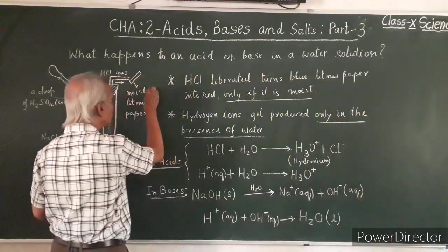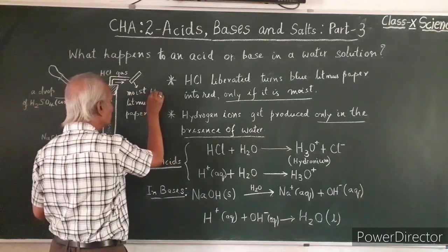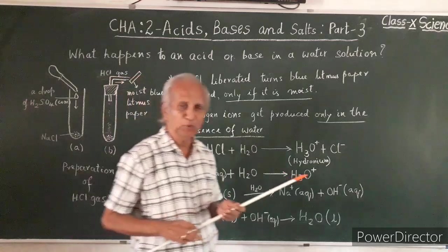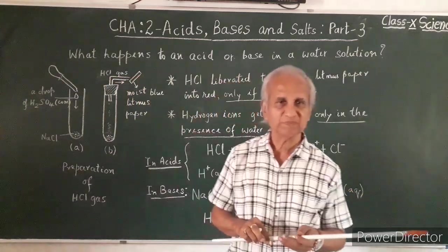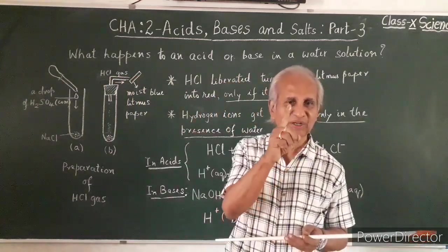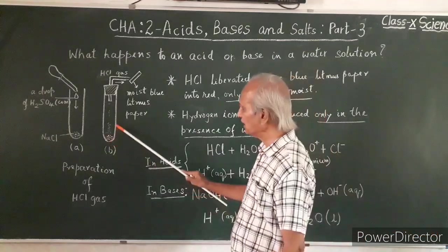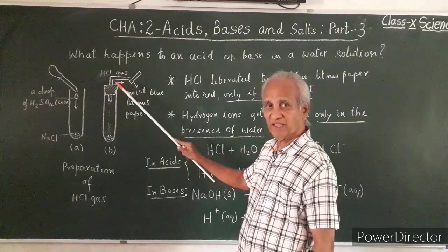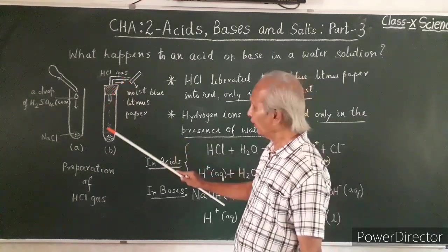Moist blue litmus paper turns into red. The hydrogen chloride gas is acidic. It needs water. There is no water available with dry paper.